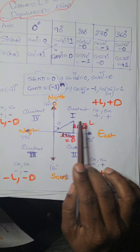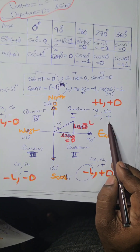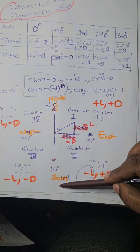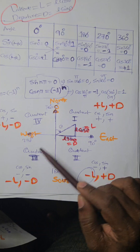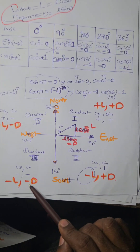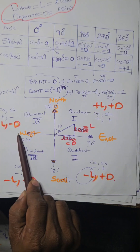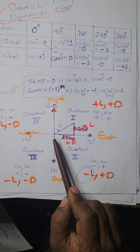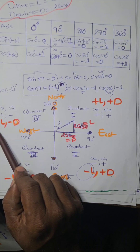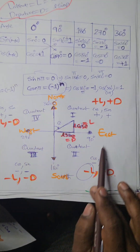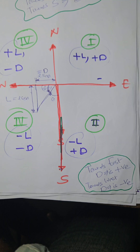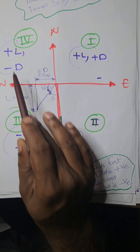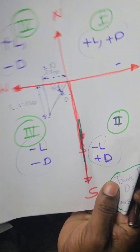This shows the conventional signs for latitude and departure. In the first quadrant, both latitude and departure are positive (+L, +D). In the second quadrant, departure is towards east so it is positive, but latitude is towards south so it is negative (−L, +D). In the third quadrant, both are negative (−L, −D) — opposite to the first quadrant. In the fourth quadrant — the northwest quadrant — latitude is towards north so it is positive, but departure towards west is negative (+L, −D). These are the conventional signs we use for latitude and departure.